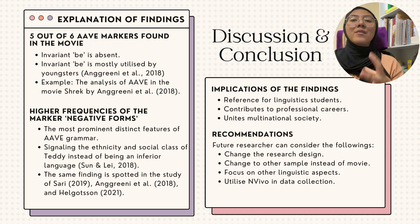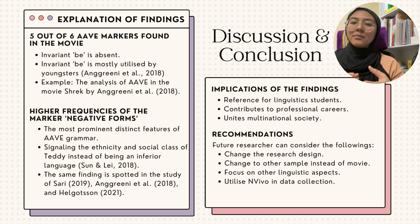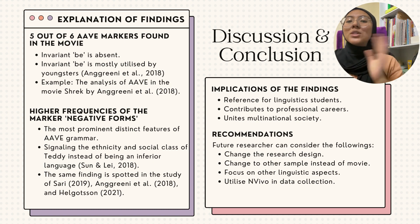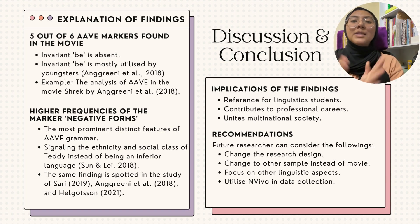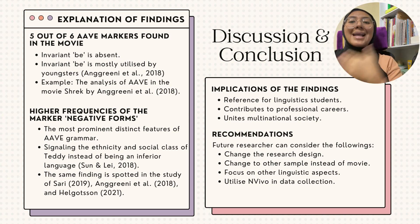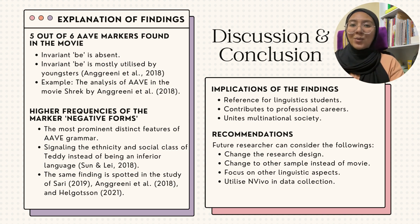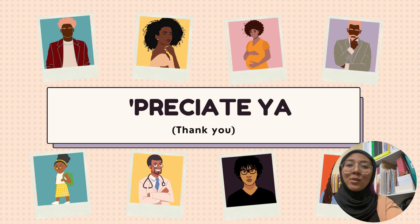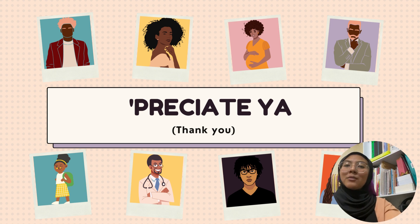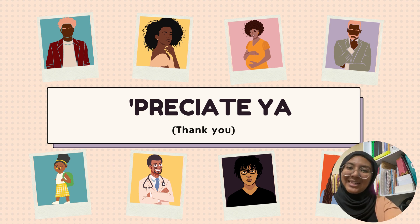In conclusion, the analysis of AAVE features in the movie The Man from Toronto is one of the many studies conducted on similar topics of AAVE features, which still has many rooms for improvement. Therefore, this paper can be used for future reference as a betterment of the next research in the field of linguistics and English language. And with that, this presentation has come to an end. Thank you for listening. Appreciate ya!